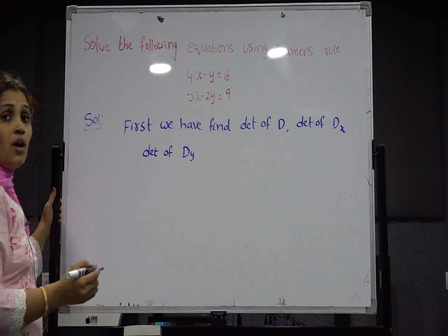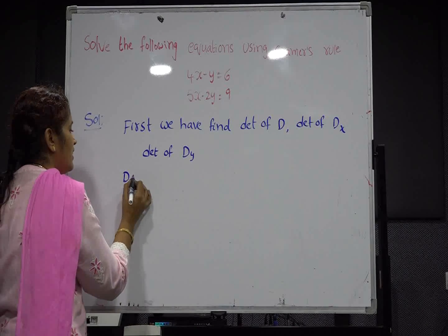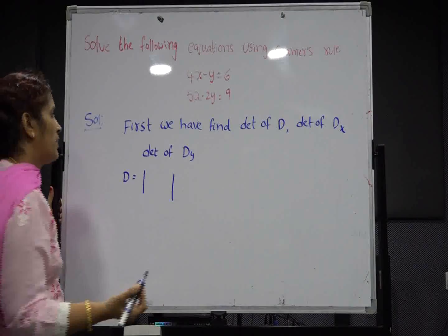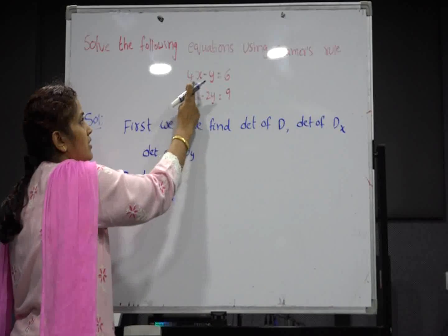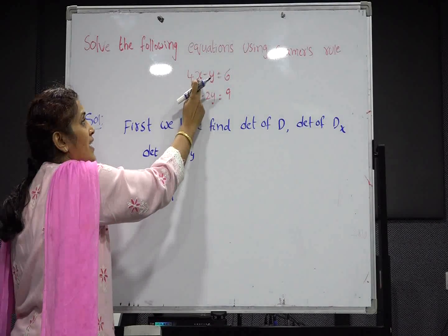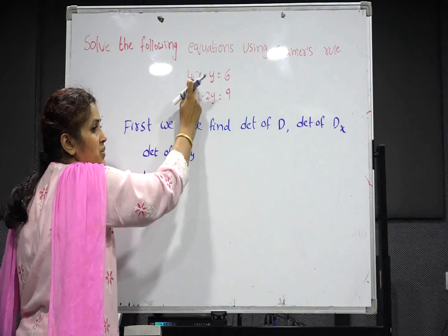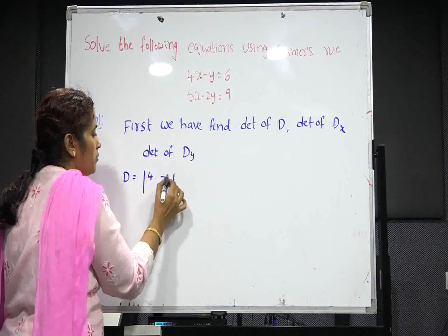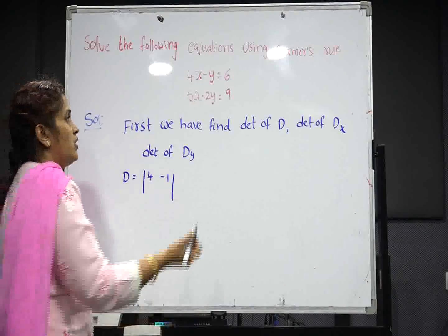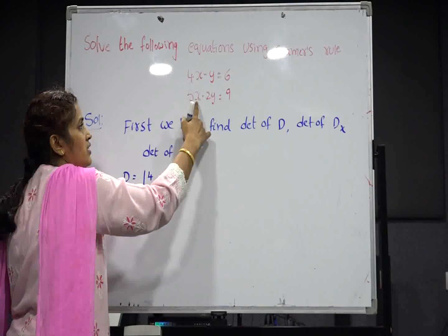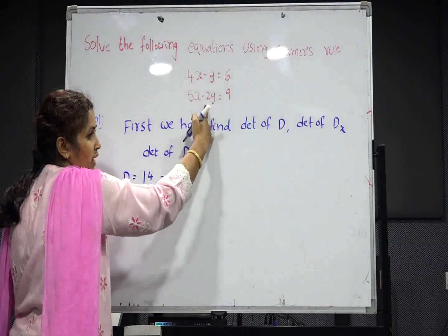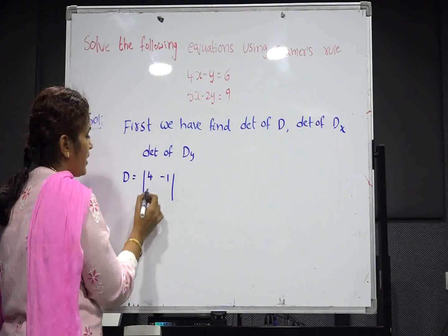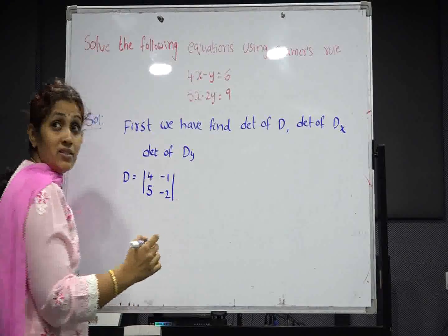First we will discuss how to write the values of D, Dx, and Dy. The value of D is written as follows: take the x-coefficient and y-coefficient from the first equation as the first row — that is 4 and minus 1. Similarly, take the x-coefficient and y-coefficient from the second equation as the second row — that is 5 and minus 2.